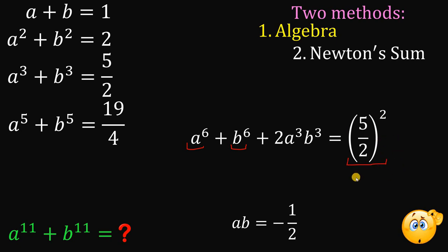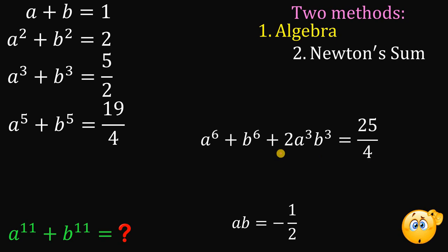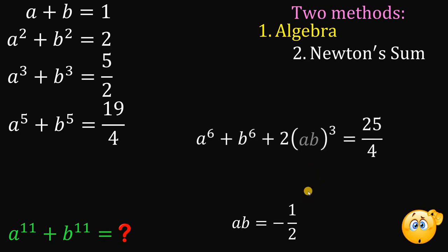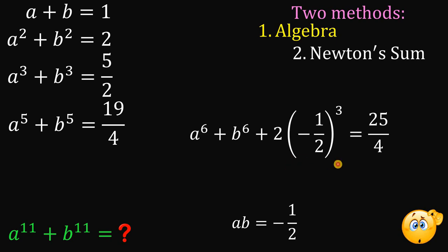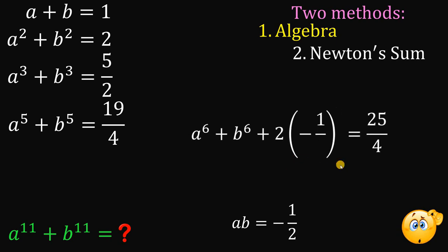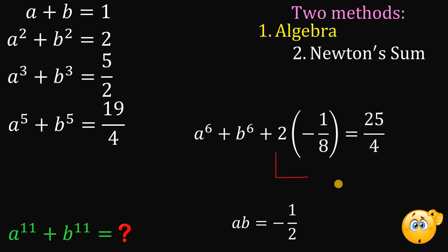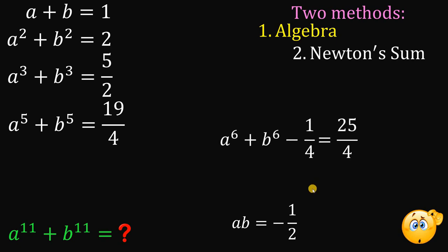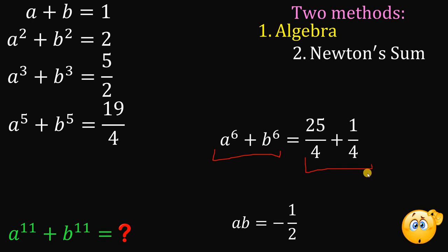Now, a cubed times b cubed can be written as ab raised to the power of 3. We know ab is negative 1 half, so we replace it. Negative 1 half raised to the power of 3 is negative 1 over 8, and 2 times negative 1 over 8 is negative 1 fourth. Adding 1 fourth to both sides gives a raised to the 6th plus b raised to the 6th equals 25 over 4 plus 1 over 4, which is 26 over 4.